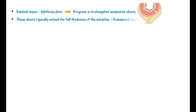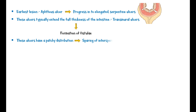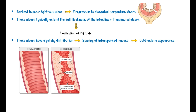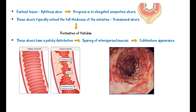These ulcers typically extend the full thickness of the intestine — so-called transmural ulcers — and transmural ulceration leads to formation of fistulae. These ulcers have a patchy distribution with sparing of interspersed mucosa, giving a characteristic cobblestone appearance. In a comparison image, normal mucosa is shown on the left side and mucosa with Crohn's disease on the right side. In a gross image of a Crohn's disease mucosa, elevated areas represent normal tissue and depressed areas represent diseased tissue.